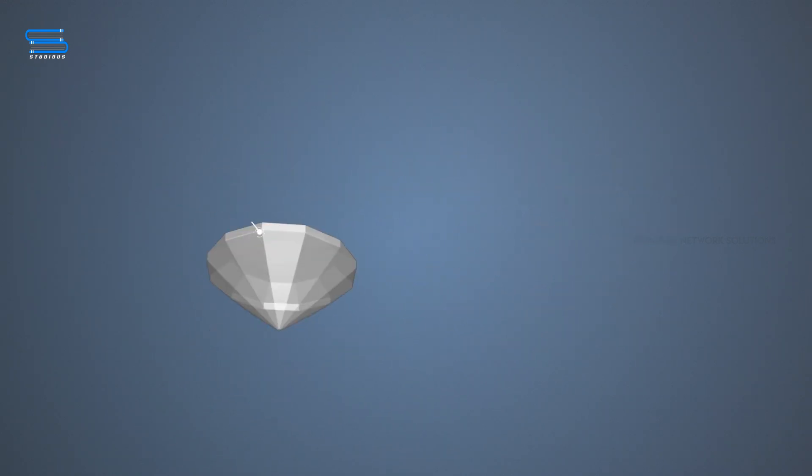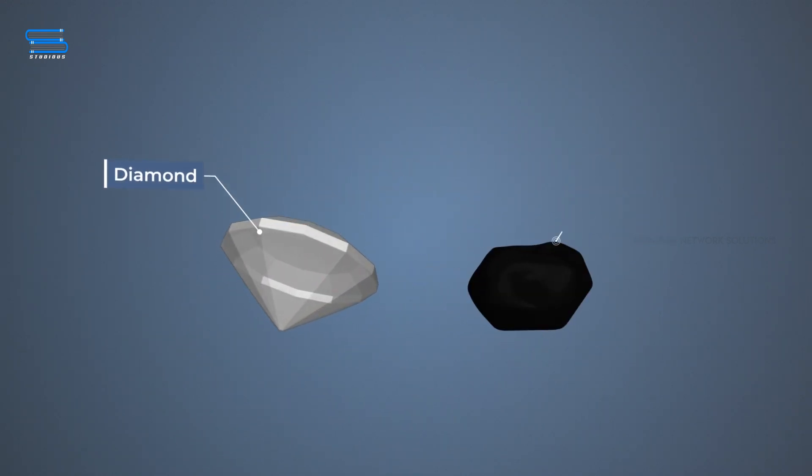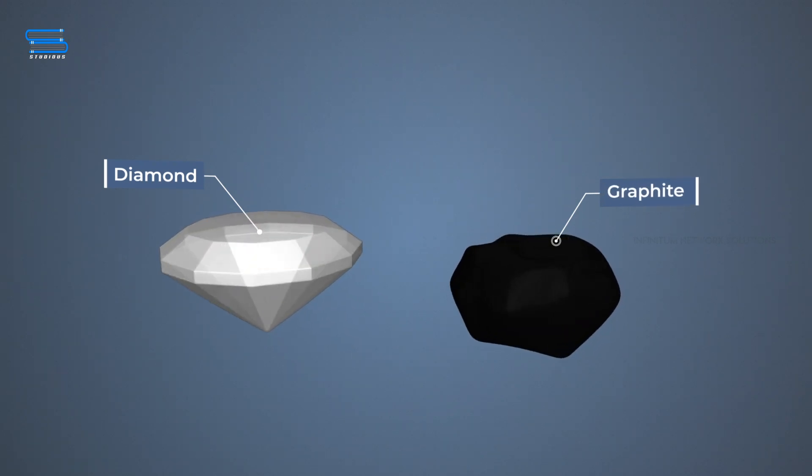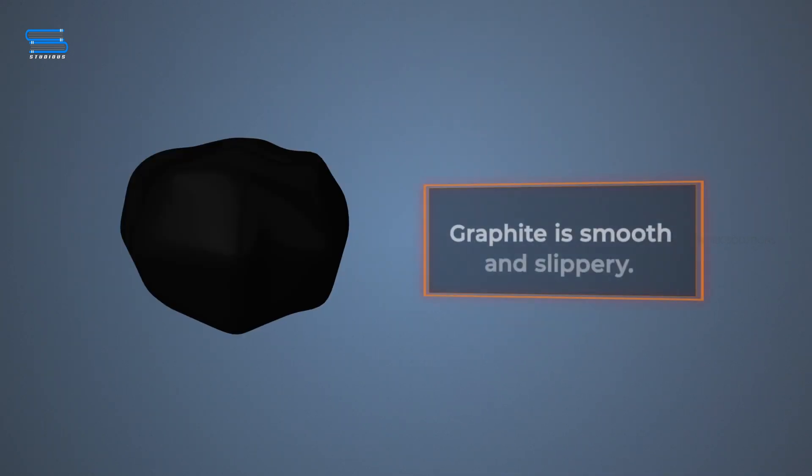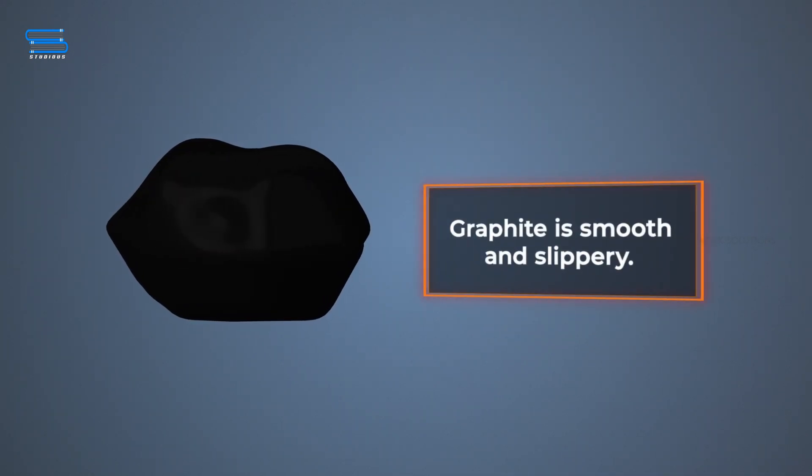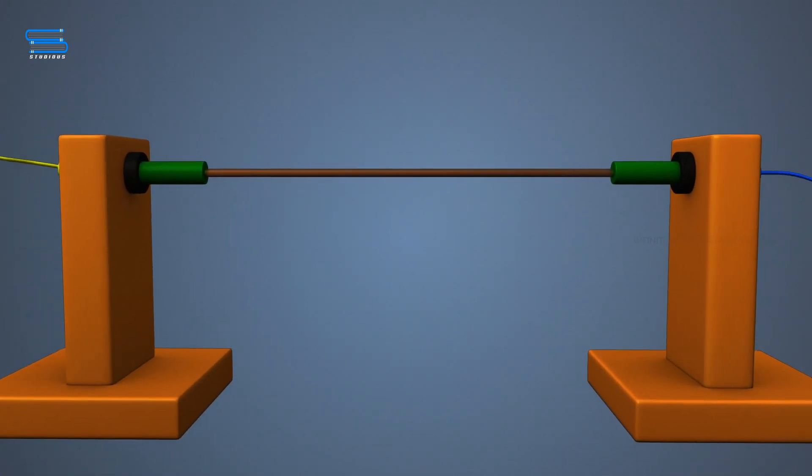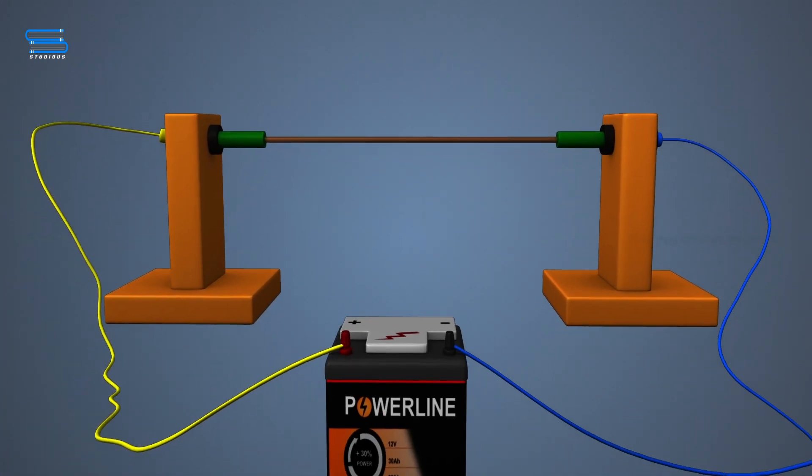These two different structures result in diamond and graphite having very different physical properties, even though their chemical properties are the same. Diamond is the hardest substance known, while graphite is smooth and slippery. Graphite is also a good conductor of electricity, unlike other nonmetals.